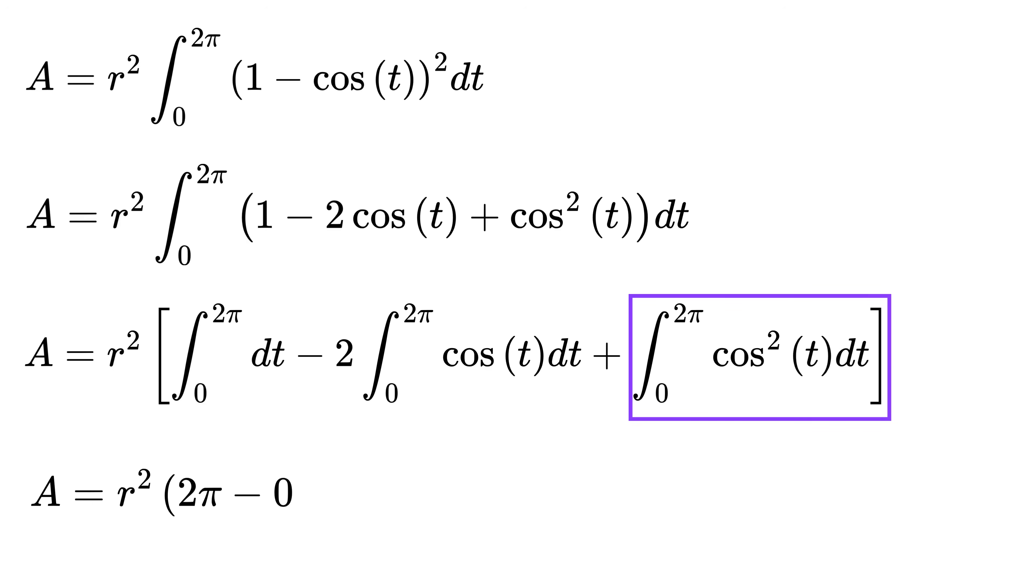Now for this part, use the formula cos square t as 1 plus cos 2t over 2, and integrate it to get pi.